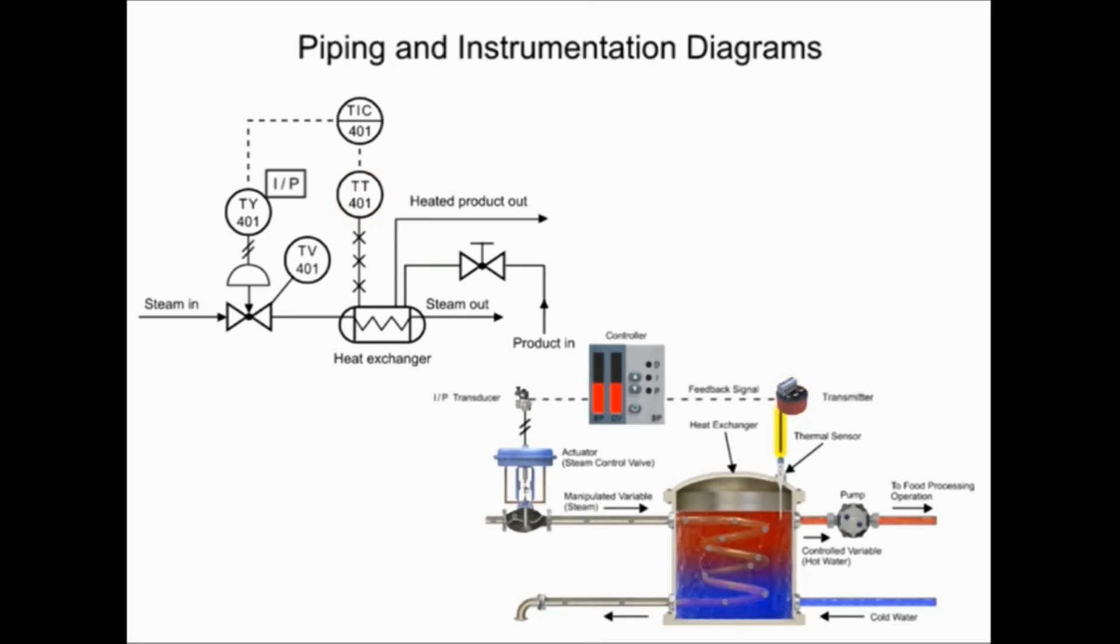A capillary tube that sends a signal from the heat exchanger to the transmitter is represented in the diagram by the line with X's. A dashed line between components indicates an electrical signal.